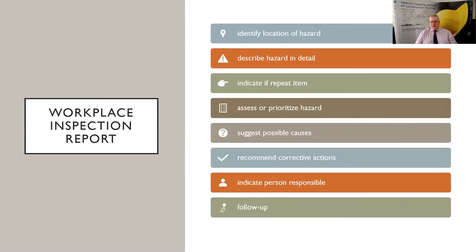The workplace inspection report: you're identifying the local hazards and trying to get the detail of the hazard so you can describe it and how you're going to deal with it. Indicate if it's a repeat item — if previous audits showed this keeps appearing, it hasn't been corrected and may require further action. Prioritise the hazards you find and put corrective actions in place, actioning them on site with the senior team. You may be able to prevent accidents by looking at possible causes, recommending corrective actions, and indicating the responsible person on site. Follow up to make sure it has been actioned.